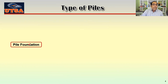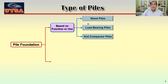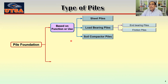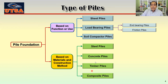Pile foundations can be classified based on function or use into three types: sheet pile, load bearing pile, and soil compactor piles. Load bearing piles can further be end bearing piles or friction piles. We can also classify them based on material: steel pile, concrete pile, timber piles, and composite piles.